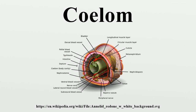The evolutionary origin of the coelom is uncertain. The oldest known animal to have had a body cavity was the vernanimalcula. Current hypotheses include the acoelomate theory, which states that the coelom evolved from an acoelomate ancestor, and the enterocoel theory, which states that the coelom evolved from gastric pouches of bilaterian ancestors. This is supported by research on flatworms and small worms recently discovered in marine fauna.